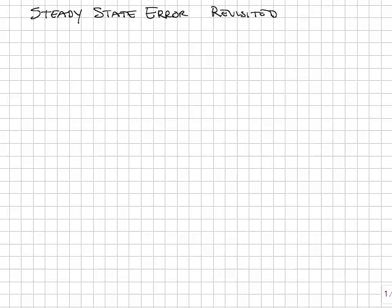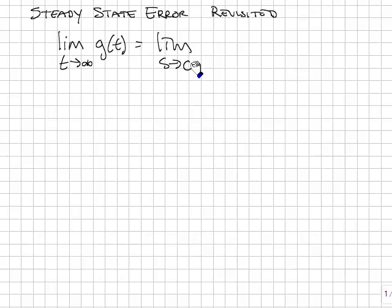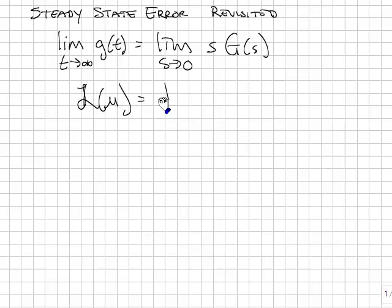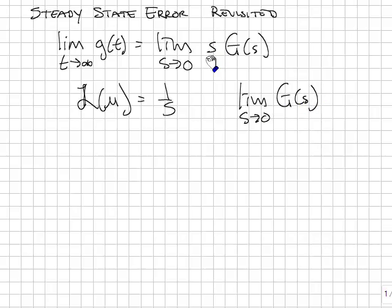We have already looked at steady-state error for a step input for a plant, using the final value theorem, which says the limit as time goes to infinity of some function of time equals the limit as s goes to zero of s times the Laplace transform of the function. The Laplace transform of a step function is 1/s, so often we just said the final value for a function with a step input was the limit as s goes to zero of G(s), since the s terms cancel.